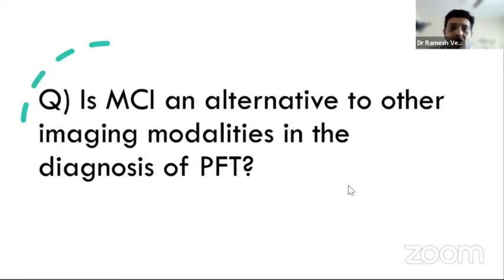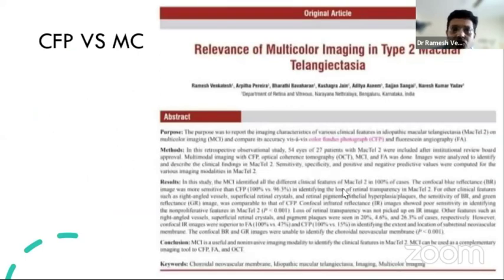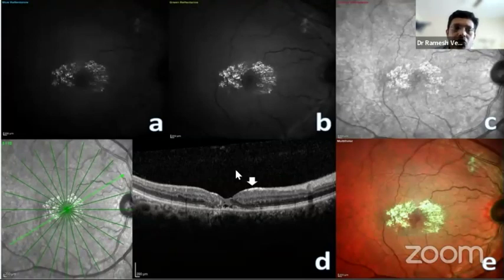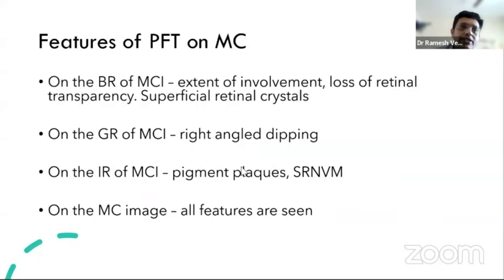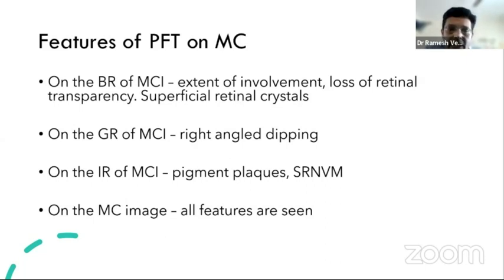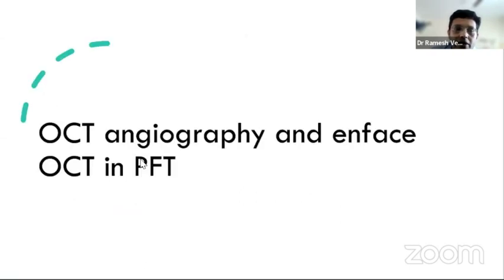On FFA, subretinal neovascularization appears as focal and diffuse hyperfluorescence. Multicolor imaging is an alternative used for diagnosis of MacTel, capable of identifying all stages. Blue reflectance shows the extent of involvement and loss of retinal transparency; green reflectance shows right-angled vessel dipping; IR imaging shows pigment plaques and subretinal neovascularization. Thus, multicolor imaging captures all features of MacTel.